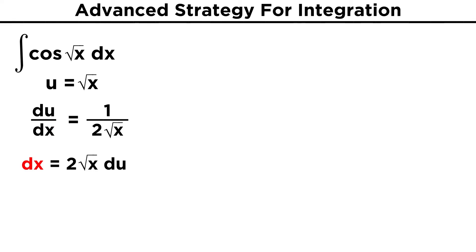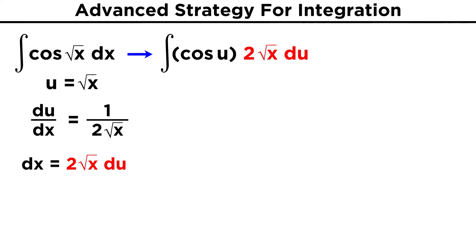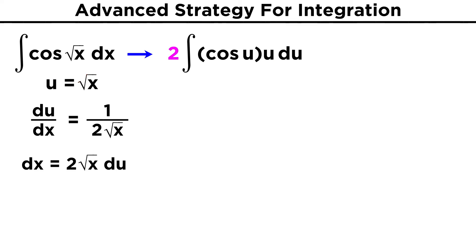But here's another trick: if you're trying substitution and you don't see g prime(x) dx in the integrand, try solving for dx instead. Here that will be two root x du. So let's replace dx with this expression. It may be the case that the terms with x in them cancel out any remaining x terms in the integrand, which will solve our problem, or failing that, they may be terms that can also be expressed in terms of u. In this case, u is root x, and we have a root x here, so why not just change that to u instead? Now we can pull the two out, and we are left with the integral of cosine u times u du.